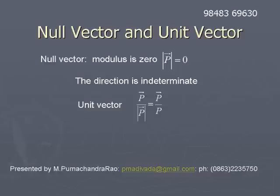A unit vector is obtained by dividing the vector by its magnitude. So if p̄ is a vector, the unit vector is p̄ divided by the modulus of p̄. Generally, the modulus of p̄ is represented by p, so it can be written as p̄ by p.